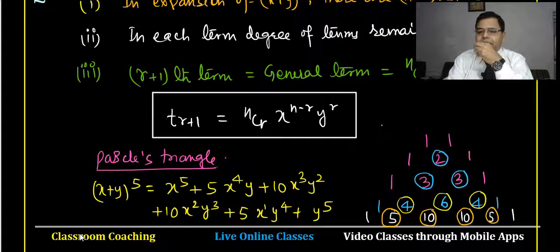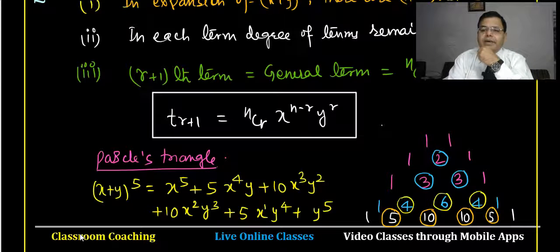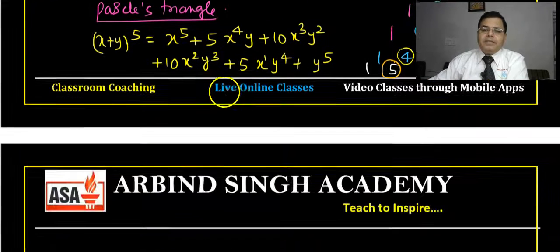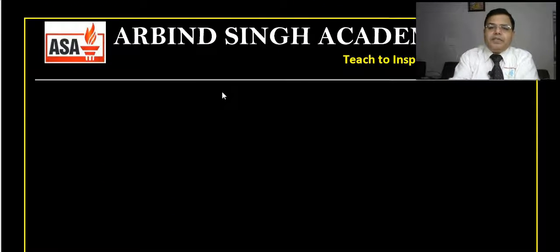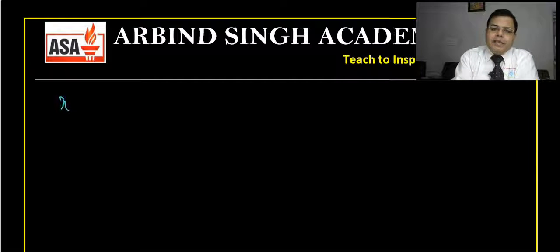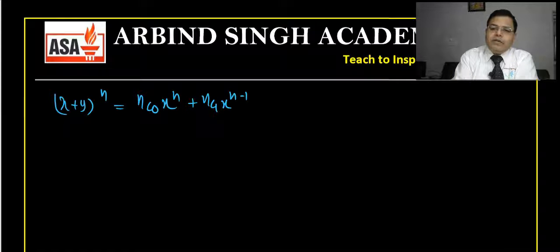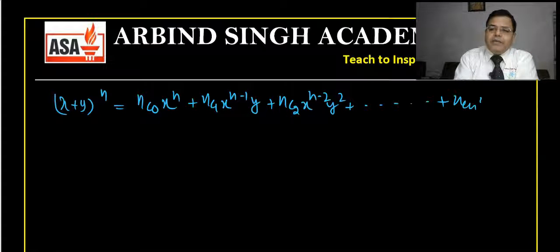Now, what will happen when the power is negative or x is negative? Let me write the expansion again. For x plus y to the power n, the expansion is nC0 x to the power n plus nC1 x to the power n minus 1 y plus nC2 x to the power n minus 2 y squared, and so on up to nCn y to the power n.